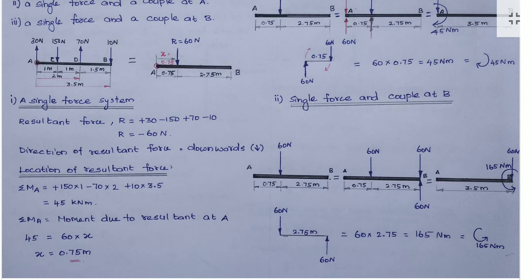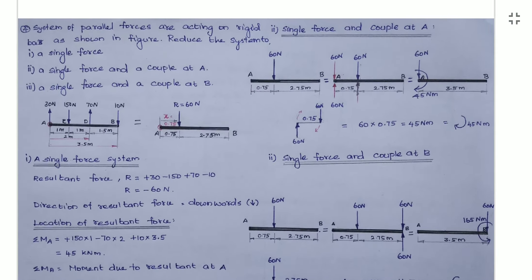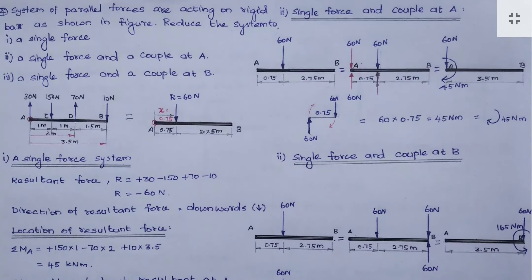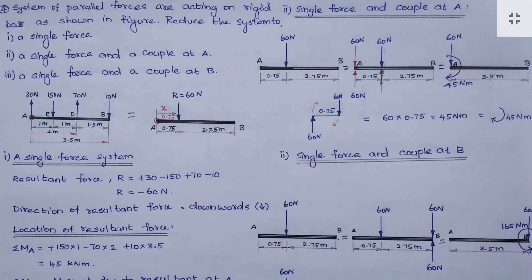Now the question is to convert this force into a force couple system at A. The resultant force is acting at a distance of 0.75 m from A. We have to move this force from that point to point A. While moving a force from one place to another, one couple will be created.